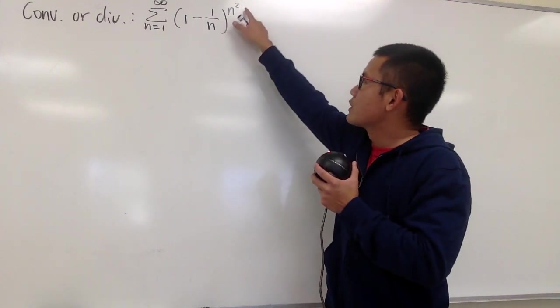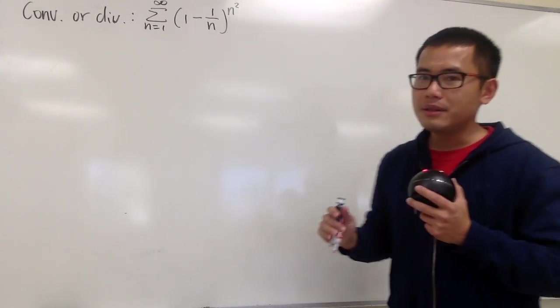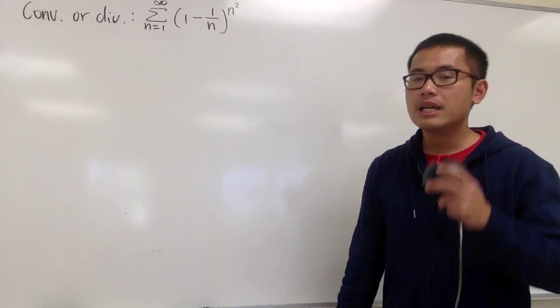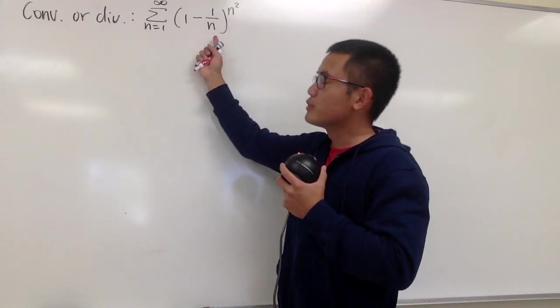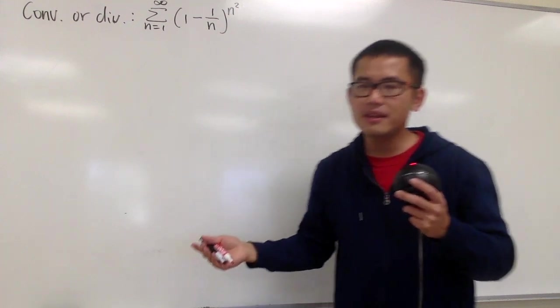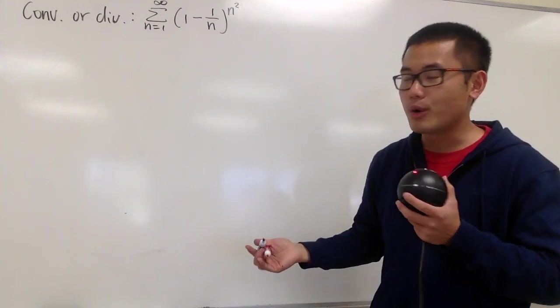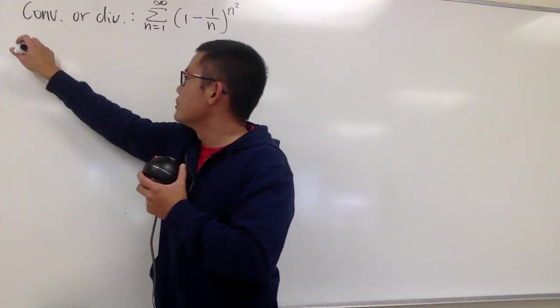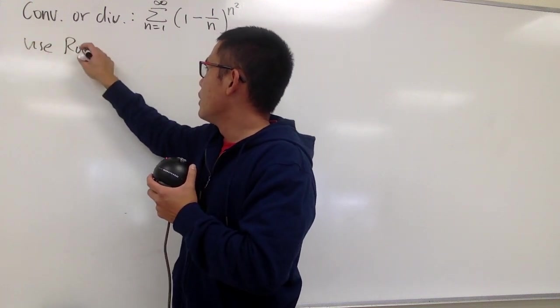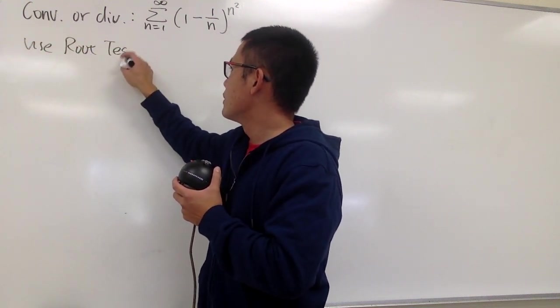Well, we have n squared, we have the n in the exponent, let's try either the root test or maybe the ratio test. But inside here, we also have the n, so I think the root test may be a better way to go. So, I will attempt to use the root test first. Hopefully, it will allow me to draw a conclusion.